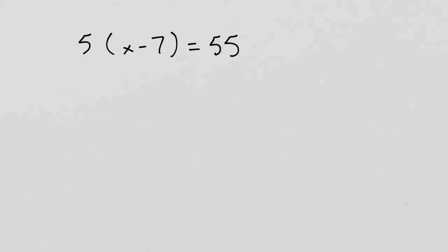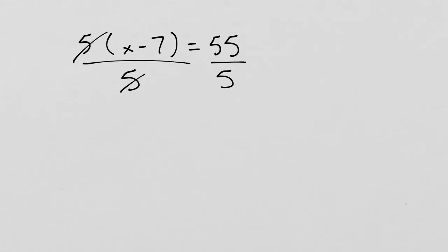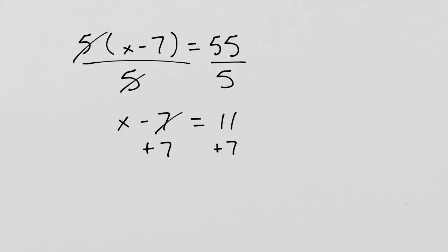We can see that we have a multiplication operation and an operation in parentheses. Using the reversal of the order of operation, we do the multiplication operation first and then the operation in parentheses. We remove the times 5 by dividing both sides by 5. The 5 will cancel out. 55 divided by 5 is 11, so now we have x minus 7 equals 11. Once you're about to perform the operation in parentheses, you can remove the parentheses. To remove the negative 7, we add 7 to both sides. The 7 will cancel out. 11 plus 7 is 18, so x equals 18.